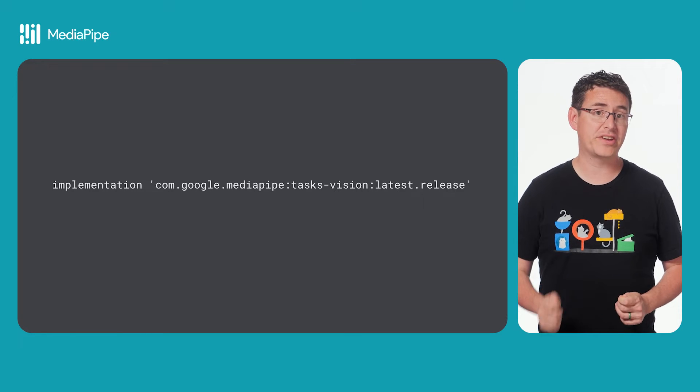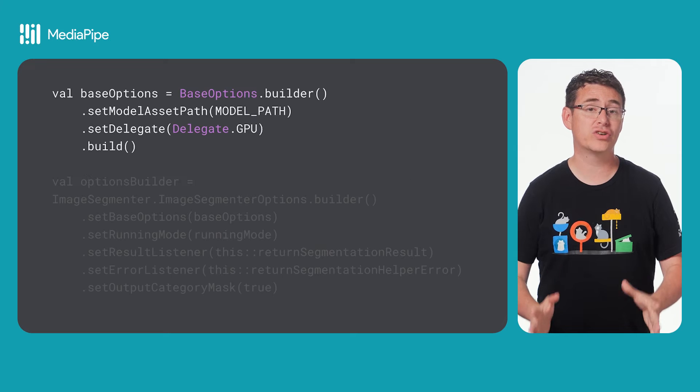Now that you're familiar with Image Segmentation, let's take a look at how you would implement this in Android. The very first thing you'll do is import the vision dependency for MediaPipe tasks. Once you have that dependency, it's time to initialize your image segmenter.